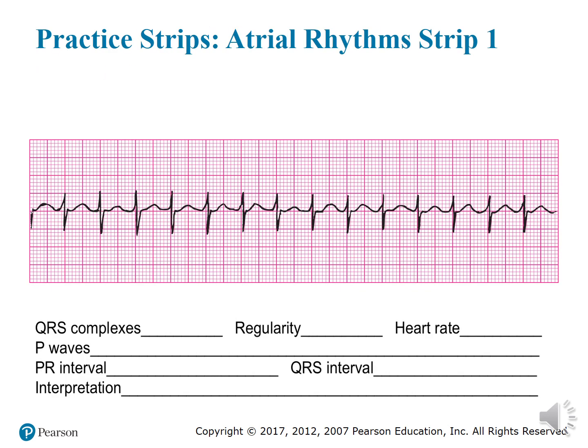Now let's work out this rhythm strip — I gave this to you for homework a couple of assignments ago, so I'm going to work out the first one. Going back to Chapter 6, we ask ourselves those questions. Are there any QRS complexes? Yes, there are. Are they uniformly shaped or varied? For the most part, they are uniformly shaped.